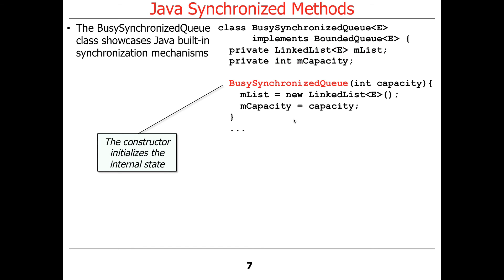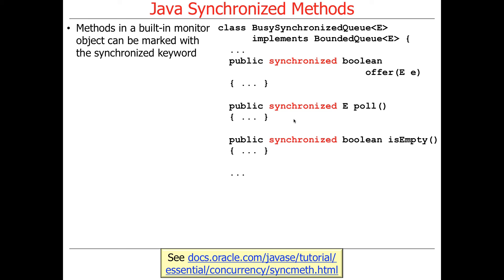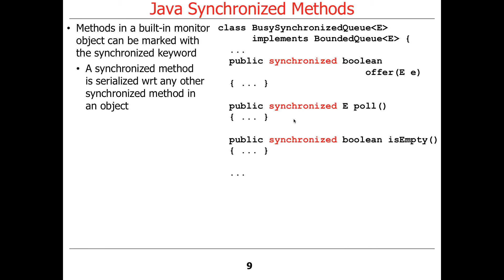The constructor simply initializes things. There are three representative methods: offer, poll, and isEmpty. Each of these methods is marked as synchronized. A synchronized method means that calls to this method will be serialized with respect to any other synchronized method call on the same object. If you have two different objects, their synchronized methods aren't synchronized with each other — the object is the unit, and the methods are synchronized on that object.